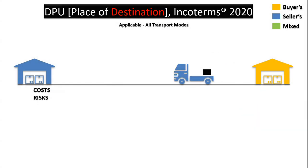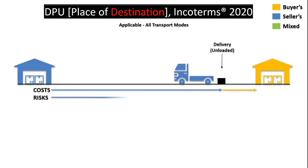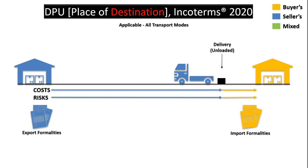Delivered at Place Unloaded, or DPU, has replaced DAT from the previous version of Incoterms to provide more clarity that unloading can happen in places other than a terminal. Here, the seller is not only responsible for bringing the goods to the destination in the buyer's country but is also responsible for unloading. Only after unloading does the risk transfer to the buyer. The seller is responsible for export formalities and the buyer for import formalities.